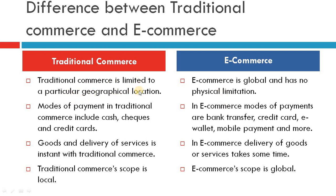The next point: traditional commerce is limited to a particular geographical location, while e-commerce is global and has no physical limitations. This is a very advantageous point for e-commerce. A person sitting anywhere — even in Pune — can order goods from Delhi. In traditional commerce, you can only shop from a market in your neighborhood. There are geographical constraints in traditional commerce but none in e-commerce, which is present globally across the globe.